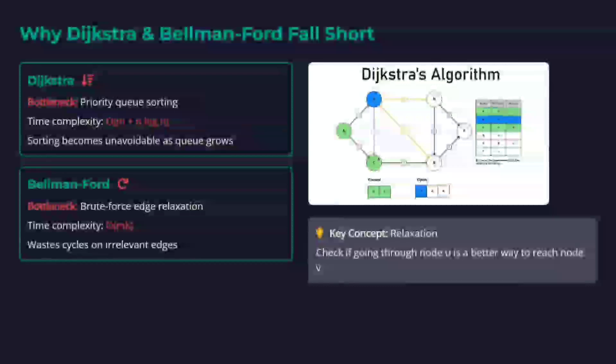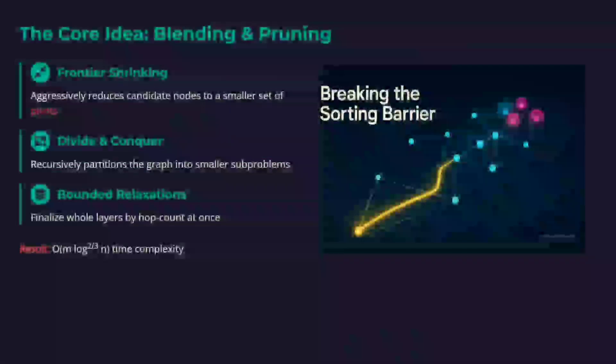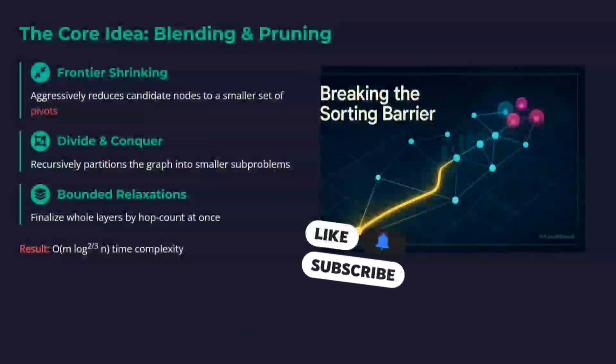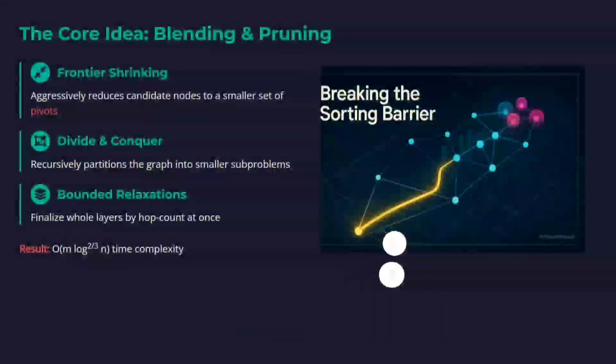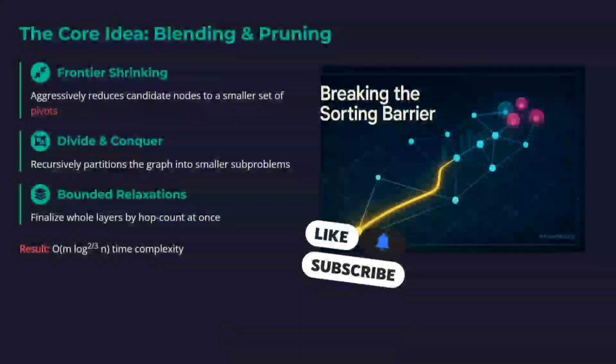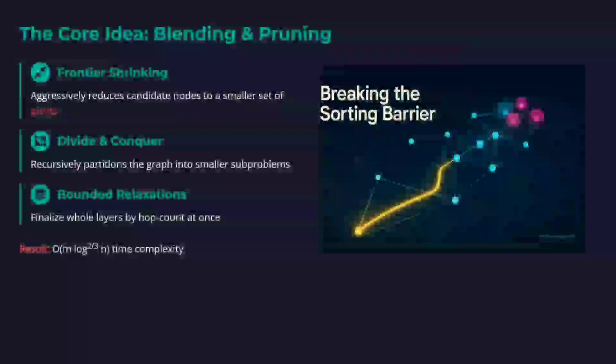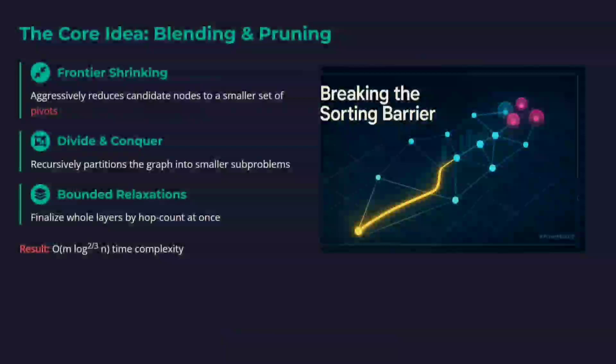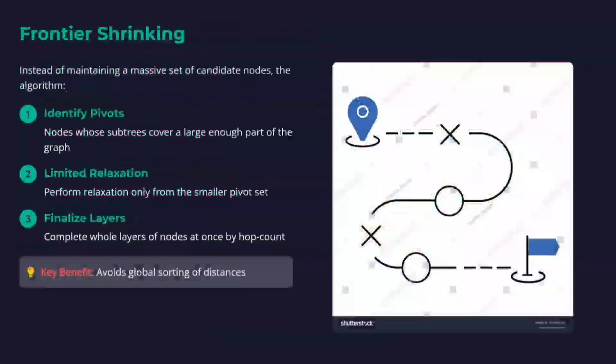The core ideas behind the new algorithm are frontier shrinking, divide and conquer, and bounded relaxation. Don't be afraid by the terms. I'll explain everything with an example. With all these three reforms coming into the algorithm, the new complexity becomes m log to the power 2/3 of n, which is quite less compared to the best n log n for Dijkstra.